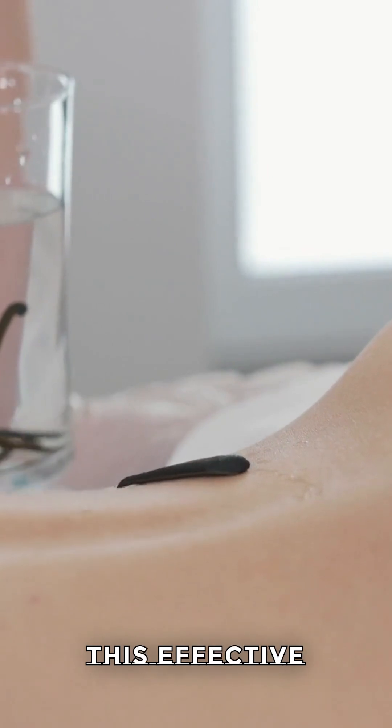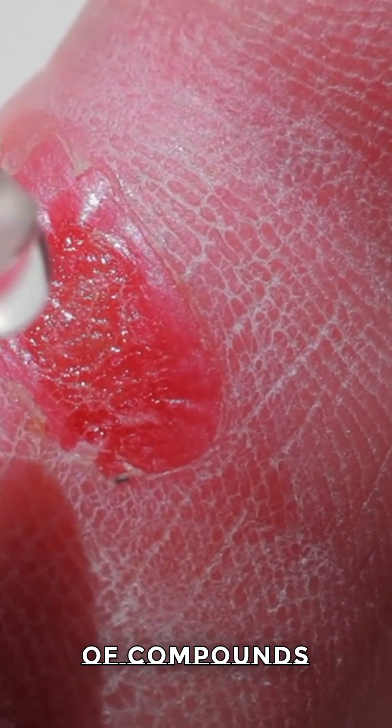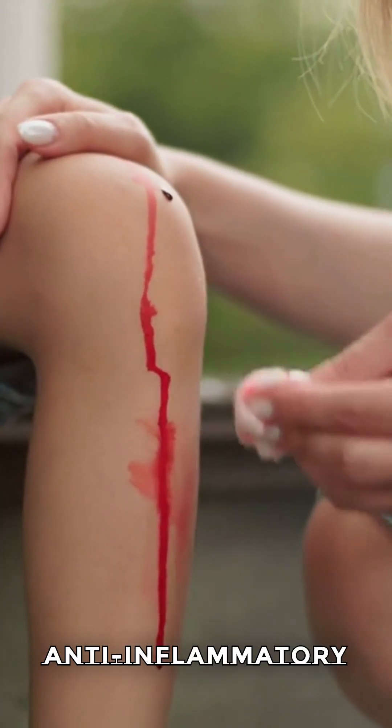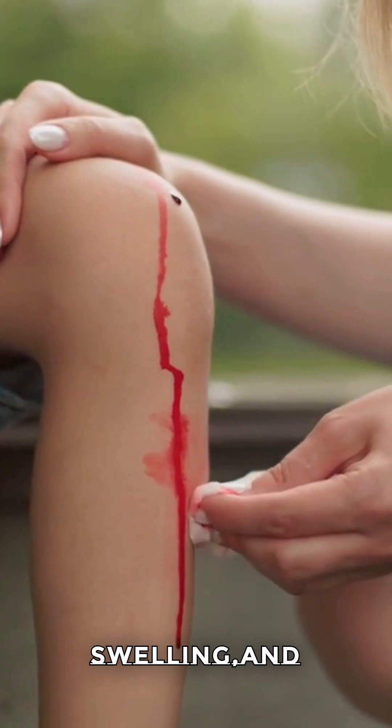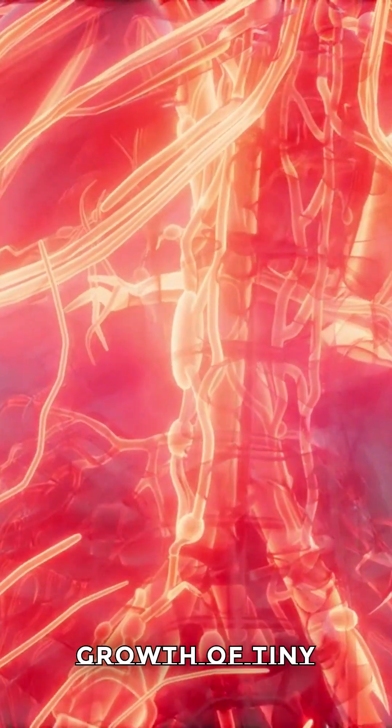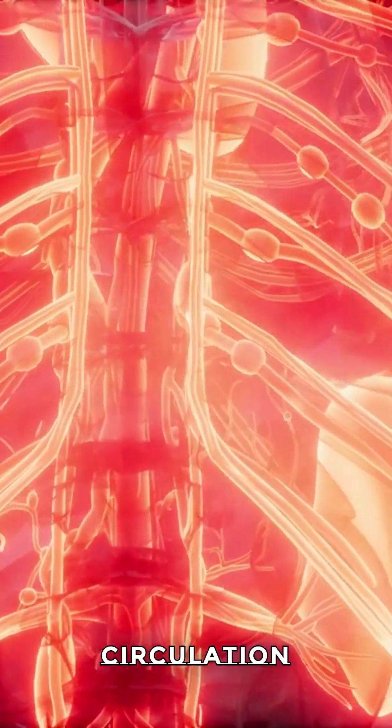But what really makes this effective is the leech's saliva. While feeding, the leech injects a special mix of compounds into the wound, including Hirudin, which stops the blood from clotting, anti-inflammatory agents that reduce swelling, and anesthetics that numb the bite site. These compounds not only thin the blood and keep it flowing, but also encourage the growth of tiny new blood vessels called capillaries, which help reestablish proper circulation over time.